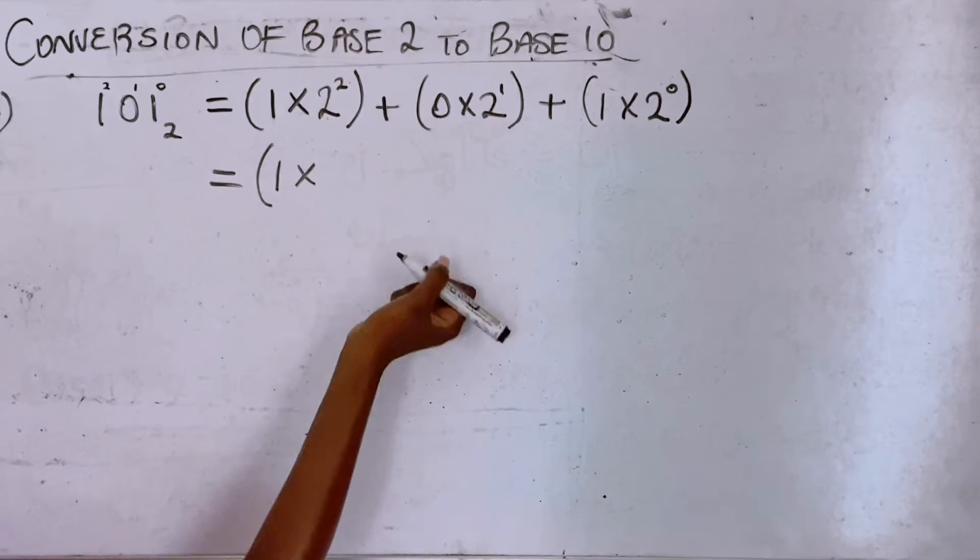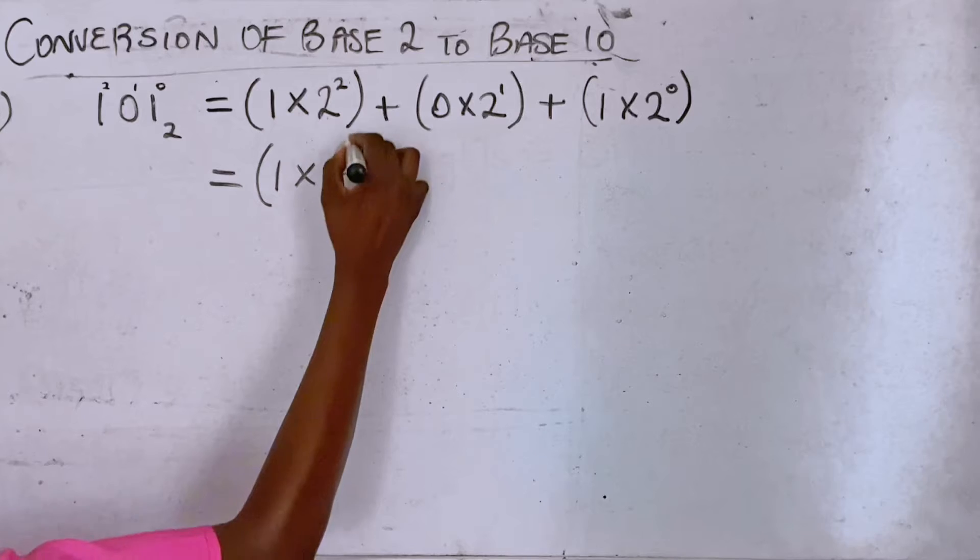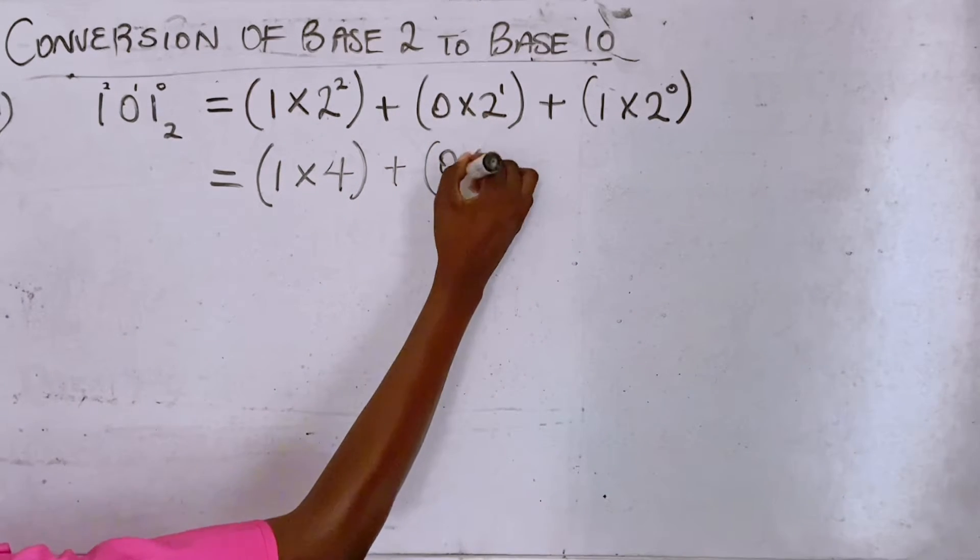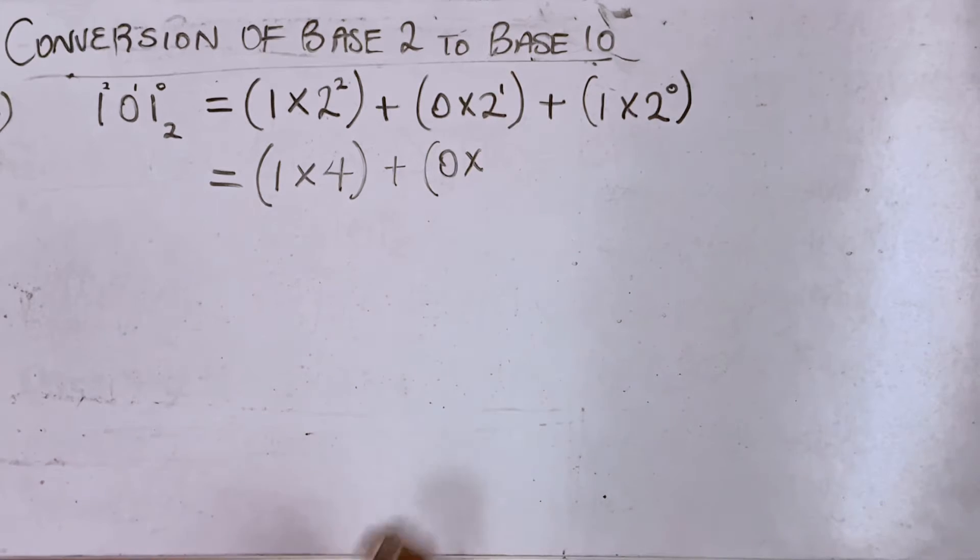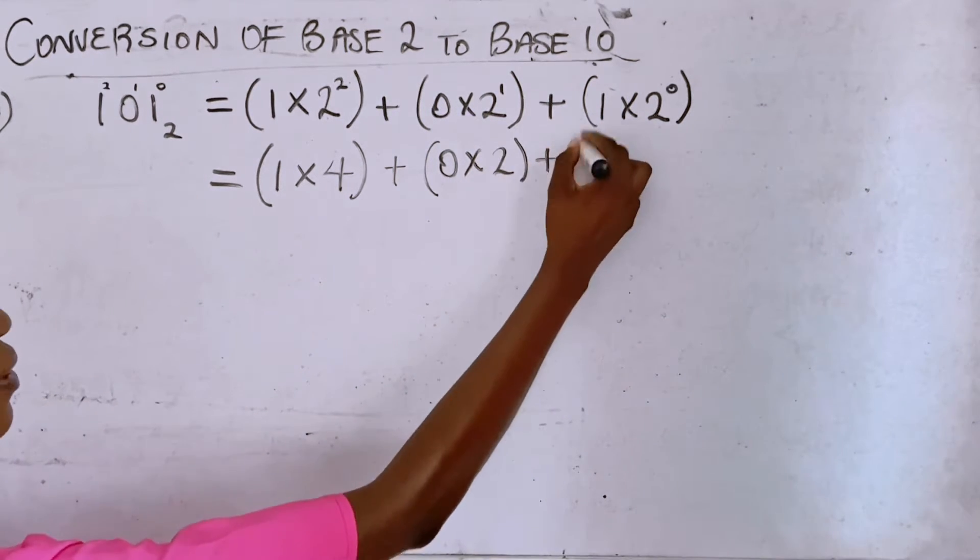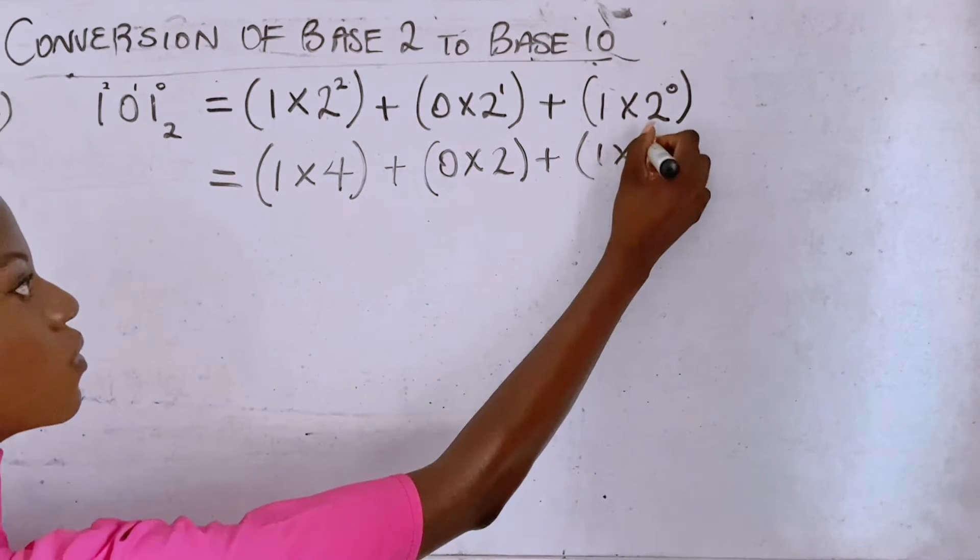That is two times two which is four, plus zero times two raised to the power of one, that's two in one place, that's two, plus one times two raised to the power of zero. Of course anything raised to the power of zero is one.